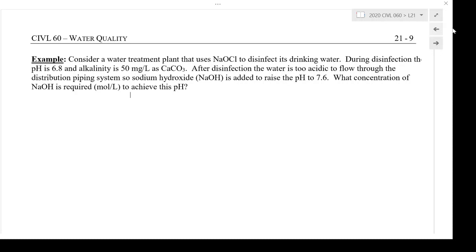In this problem we have a water treatment plant that's using sodium hypochlorite for disinfection and their pH is 6.8 and alkalinity is 50 milligrams per liter of CaCO3. The pH is too low to put into the distribution system so they're going to add sodium hydroxide to raise it up to 7.6 and we want to know how much sodium hydroxide is going to be required.